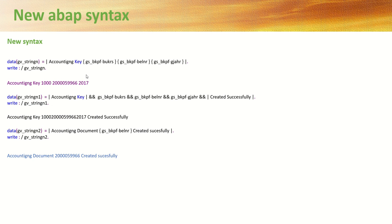Now from the new syntax, that is ABAP 7.4 onwards, we can do the concatenate with a new syntax. Here I have declared a variable using inline declaration. With the new syntax we can use the pipe sign for concatenate, so 'my accounting key' is a text element, and inside the curly brackets I use the variables. You can see the output like this — by default it is separated by space.